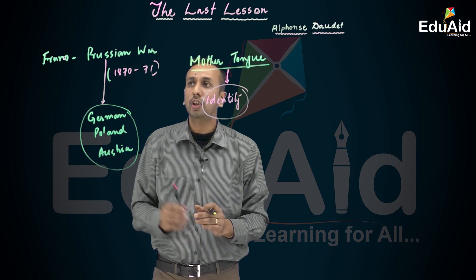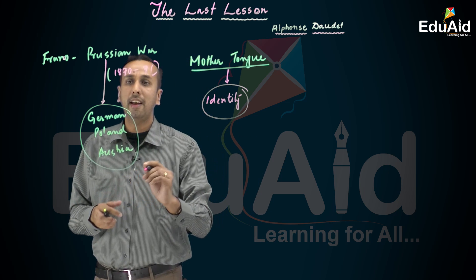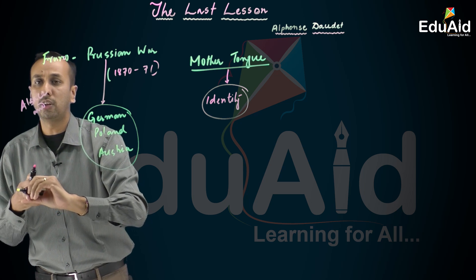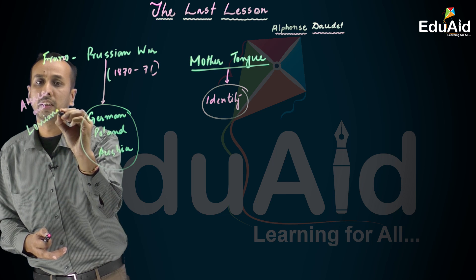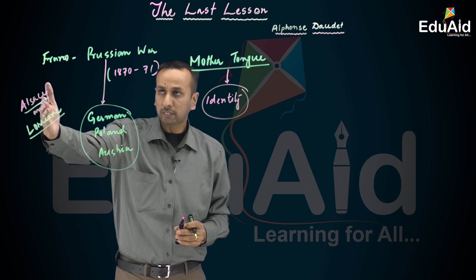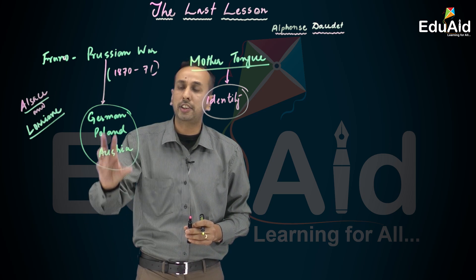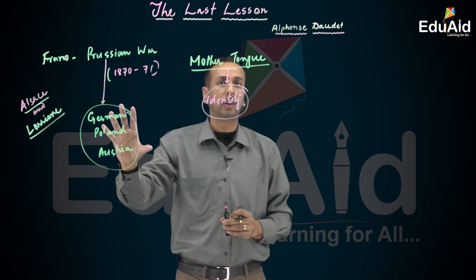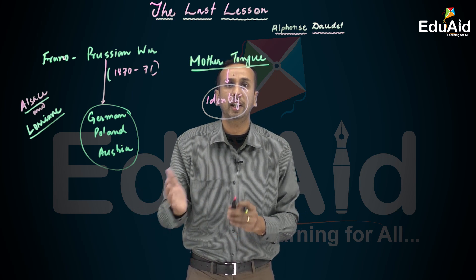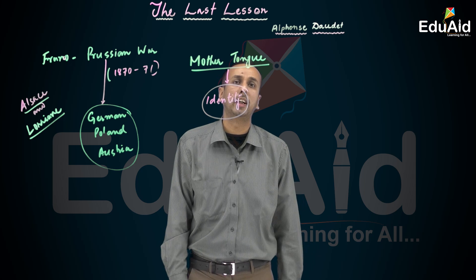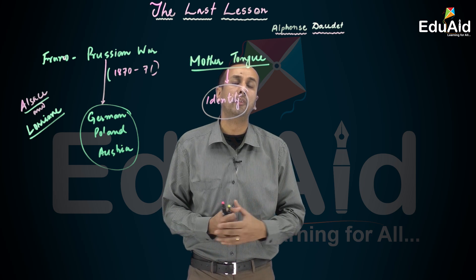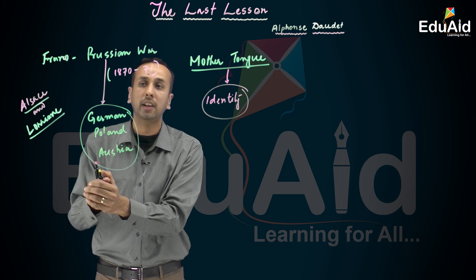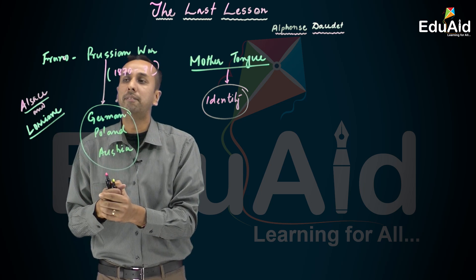As per the treaty of the war, two border districts of France, Alsace and Lorraine, were captured. The German language was imposed after the war was held.